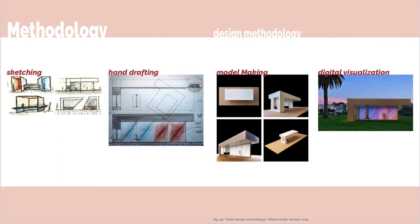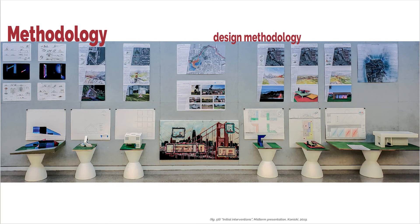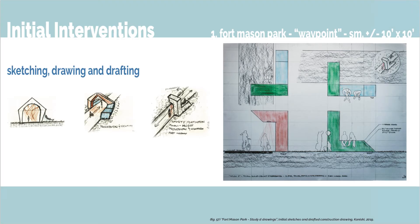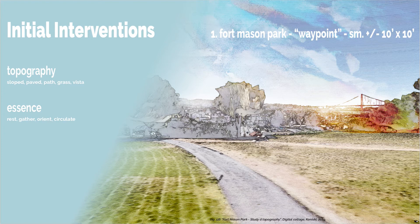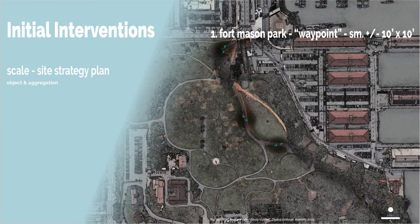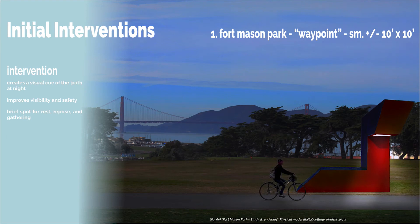The initial designs of this thesis relied on a strictly analog design process involving sketching, hand drafting, model making, and finally digital visualization into the site. This design methodology relied on analog means as a way of iterating geometry and testing scale. The first study was titled Waypoint, focusing on the path within the park and its relationship to the park. The study used simple geometric objects and aggregated them to create wayfinding points along the path, with the idea coming from improving visibility and safety at night for cyclists who passed by.